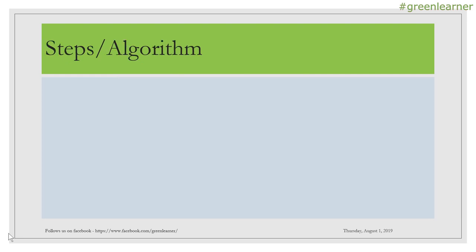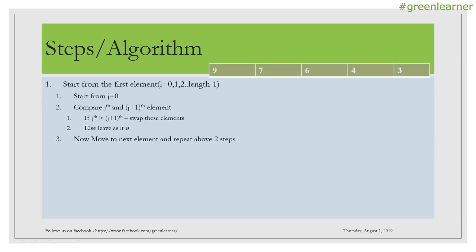Now let's understand the algorithm. This is our example input. We start from the first element — this is the outer loop. Inside that, I will start from the first element again. Then I will compare element at index j and j plus one. For the first iteration j equals zero. I compare the first and second elements. If the first is greater than the second, I swap them — seven and nine get swapped.